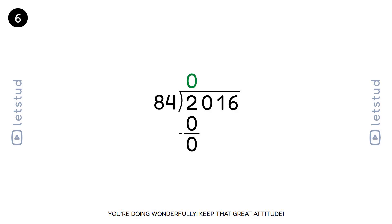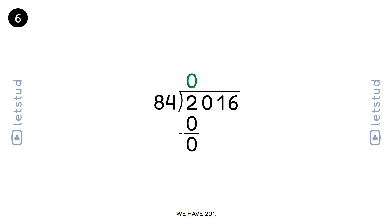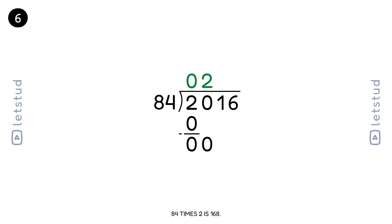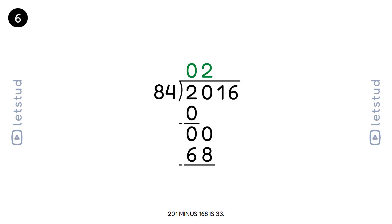You're doing wonderfully, keep that great attitude. Now let's bring down the next digit, 1, making it 201. 84 fits into 201 two times. 84 times 2 is 168. 201 minus 168 is 33.